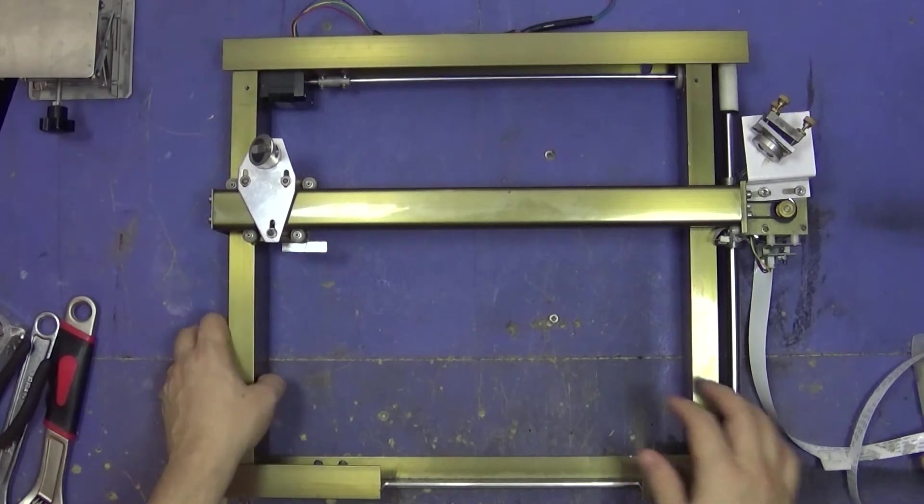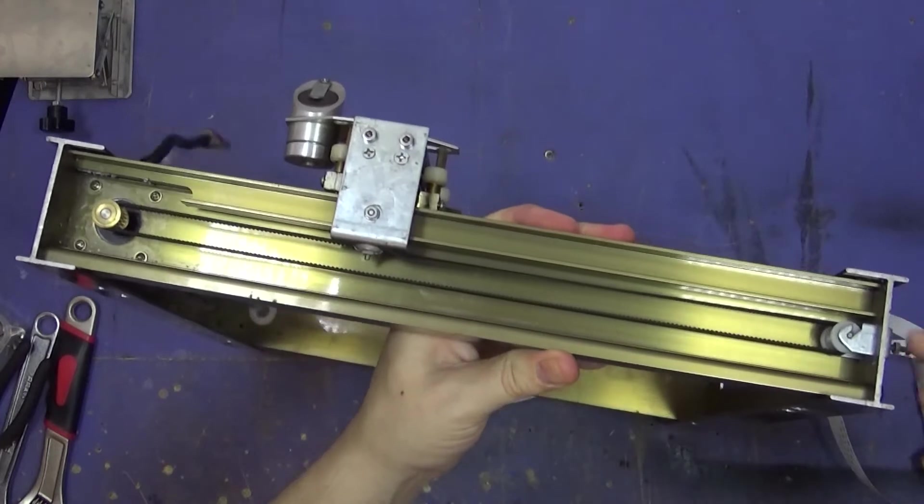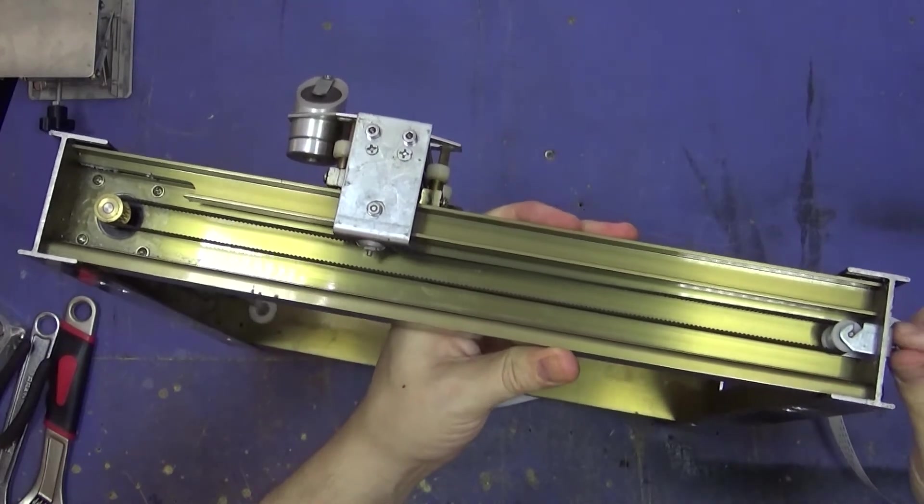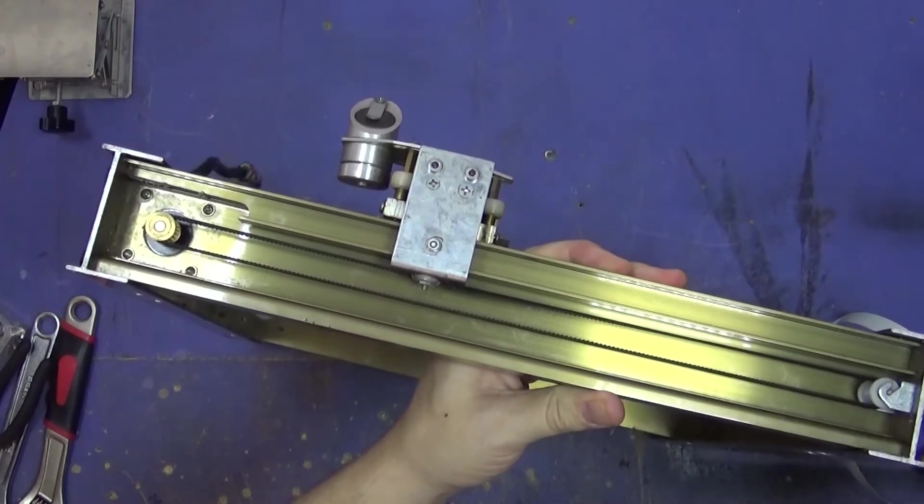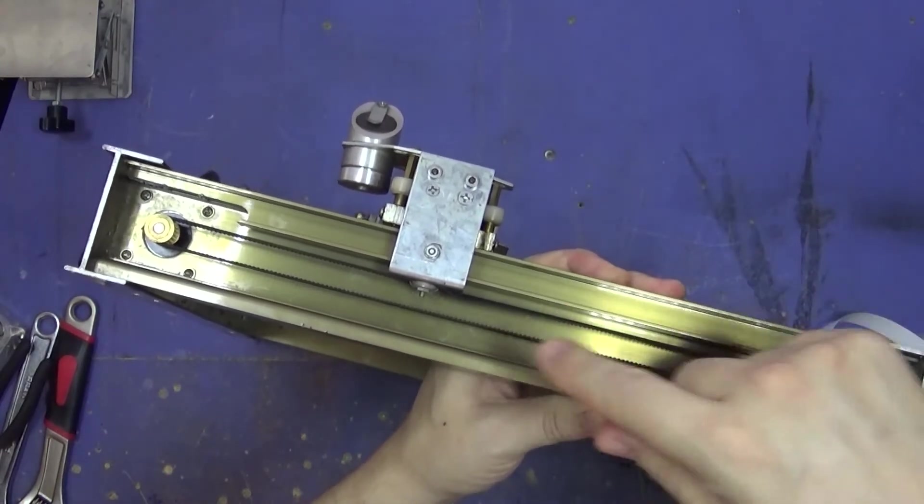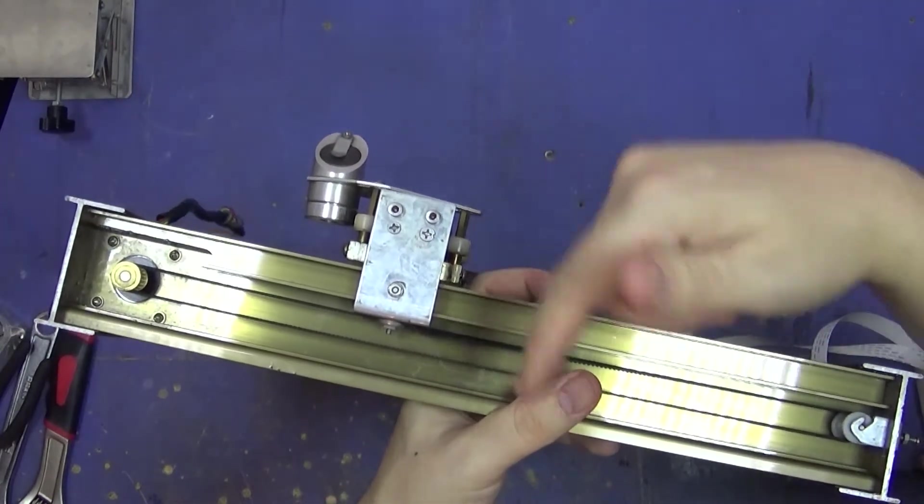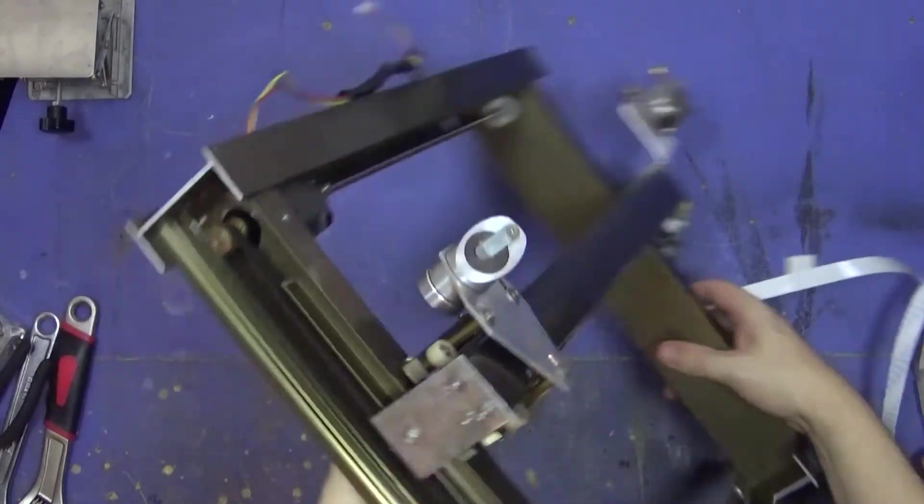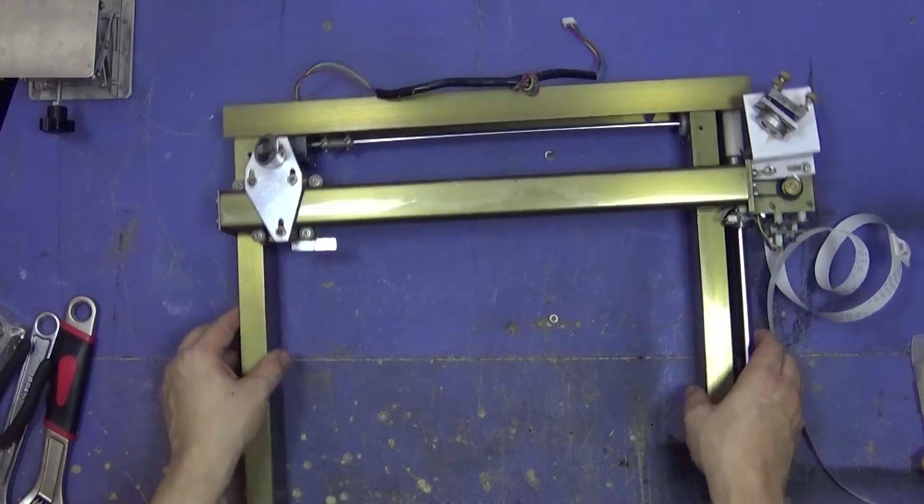Okay, after a bit of umming and ahhing, I think that I'm going to try one thing first which is I'm going to loosen off this belt by turning this screw and then I'm going to bend it back into the right sort of shape and then I'm going to tighten it back up and see if it was just the tension of the belt causing it to bend back.